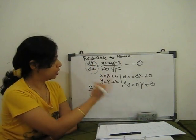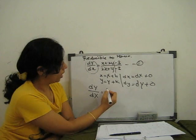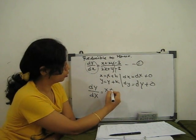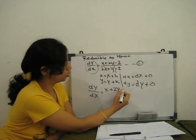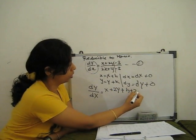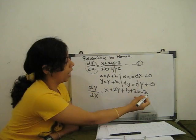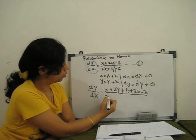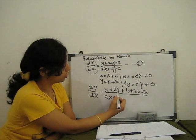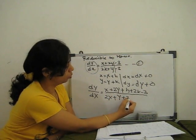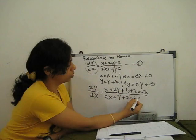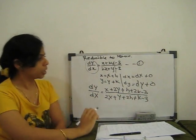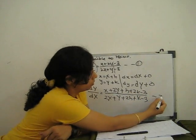So with x = X + h and y = Y + k substituted, the numerator becomes X + 2Y + (h + 2k − 3) and the denominator becomes 2X + Y + (2h + k − 3). We combine all the constants at one place. This is our second equation.